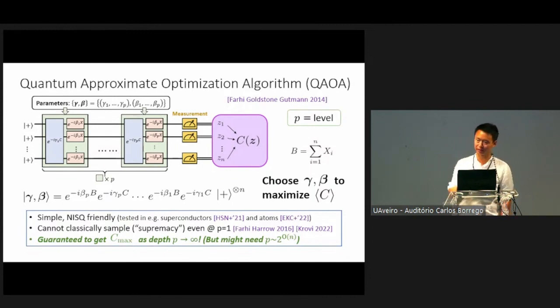Now this algorithm is attractive for a few reasons. First, it's one of the simplest algorithms you can write down. For that reason, it's very NISQ friendly for implementation. In fact, it has already been tested in many experiments, such as superconducting qubits and cold atoms. Secondly, this algorithm is very quantum, in the sense that you cannot actually classically sample from this output distribution, even at the lowest level p equals 1, assuming some reasonable complexity theory conjectures, which is similar in flavor to recent quantum supremacy experiments.